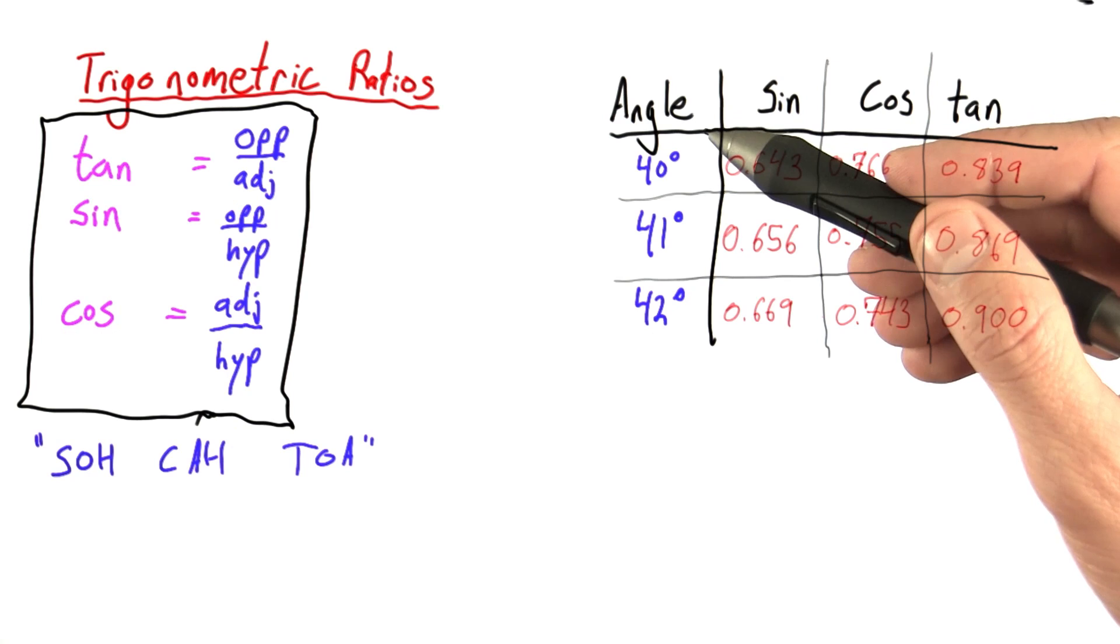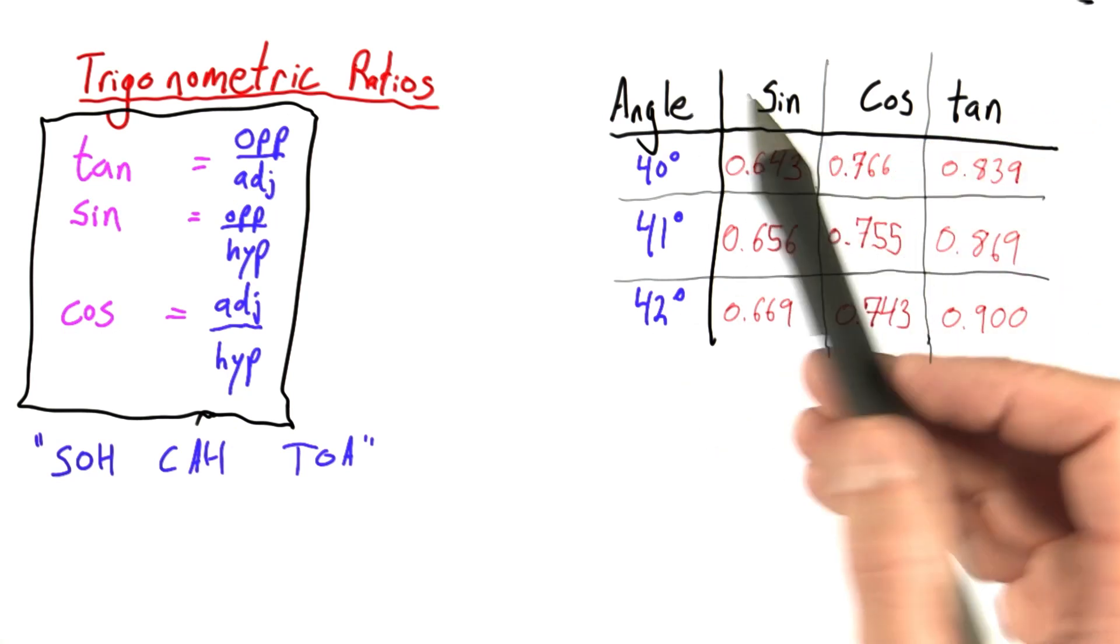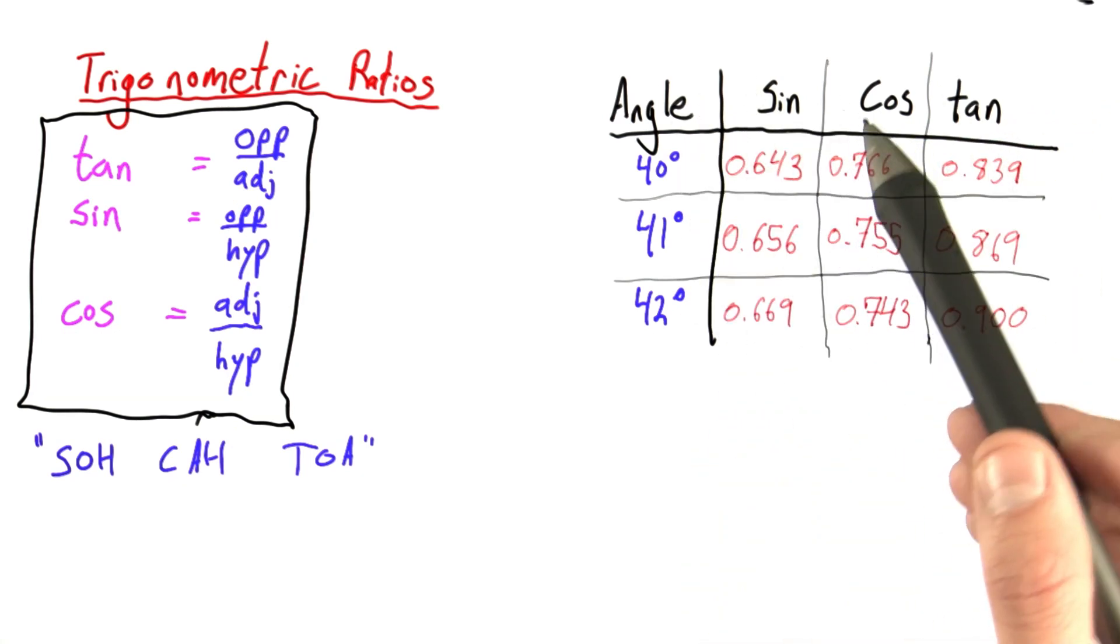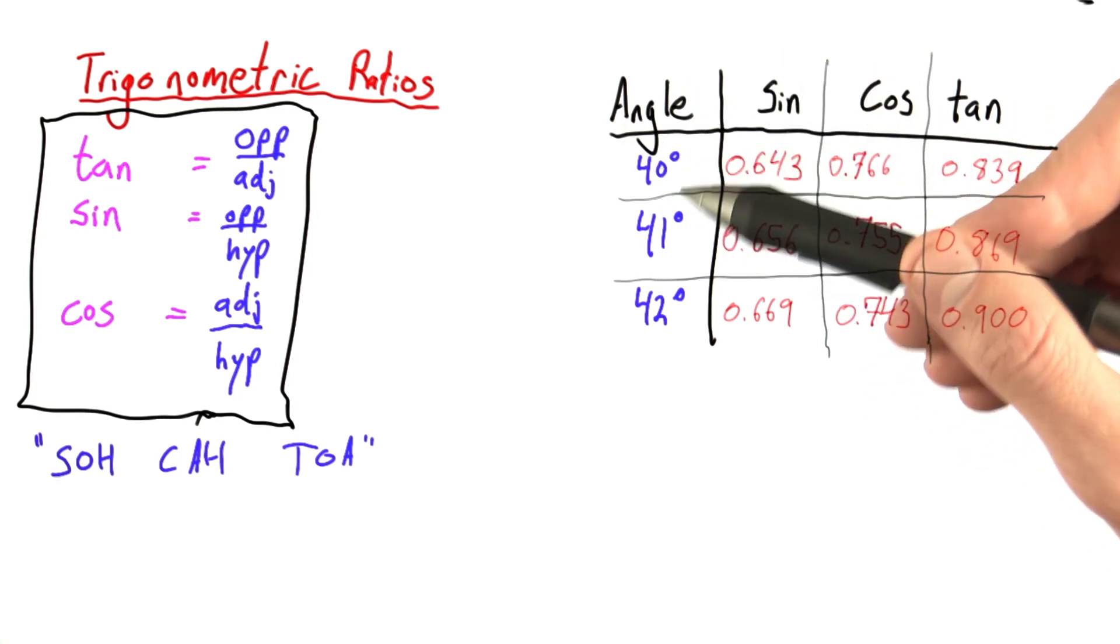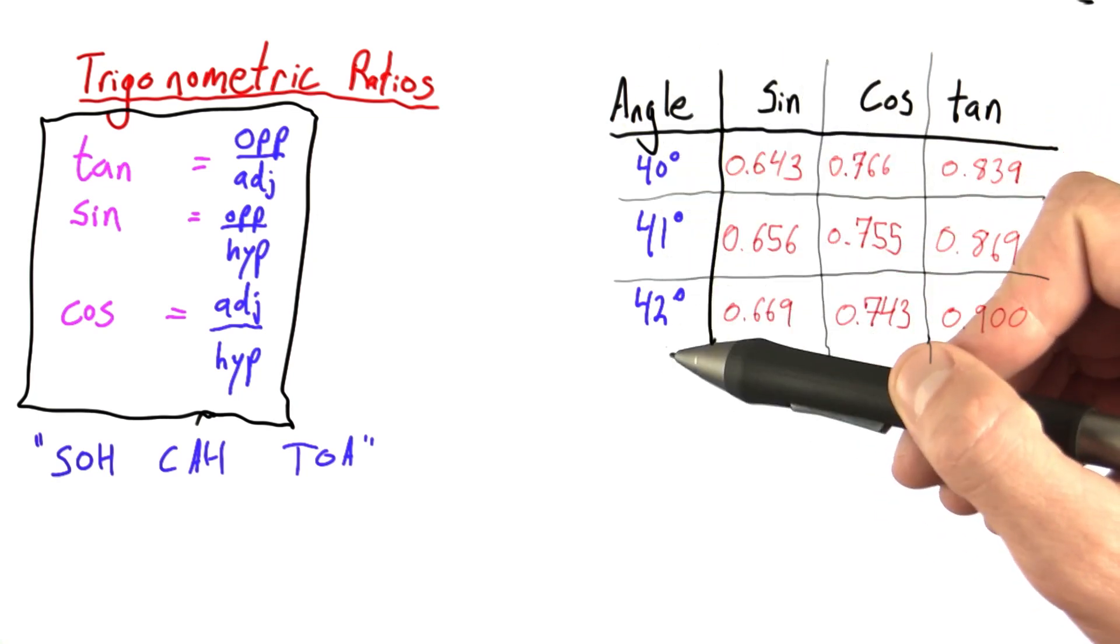Here's an example table of trigonometric ratios. In the columns, we have sine, cosine, and tangent, and we have these values computed for just a few degrees here: 40, 41, 42 degrees.